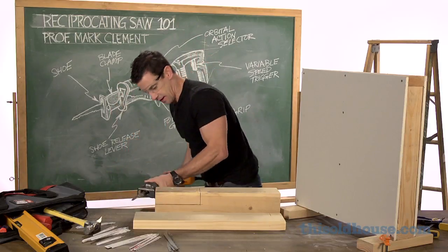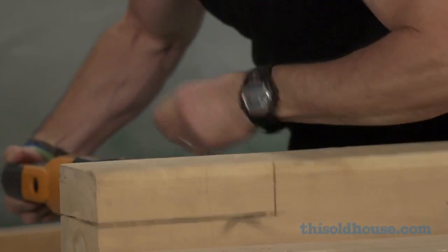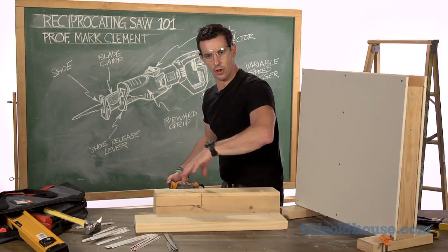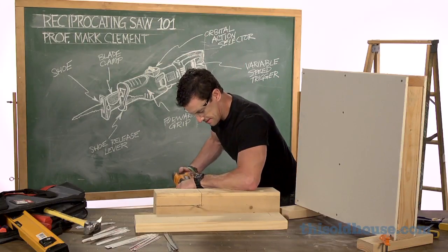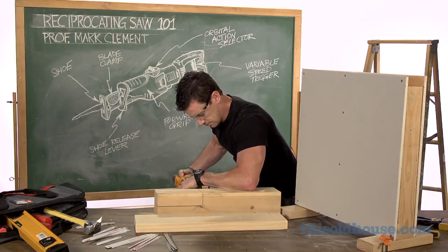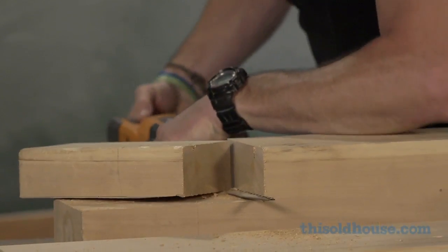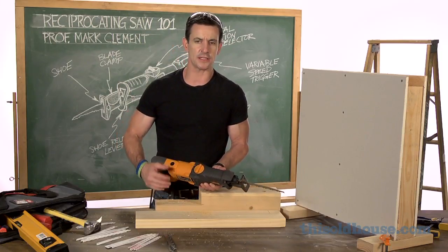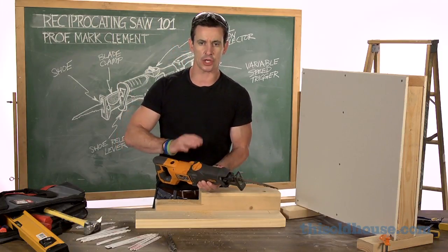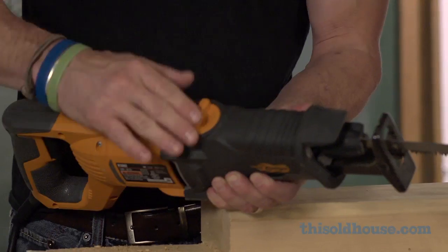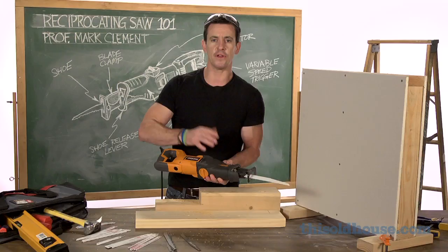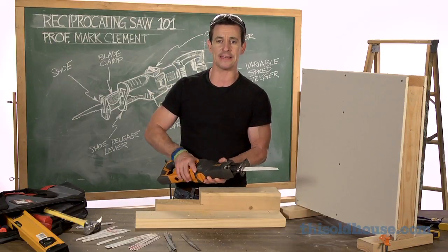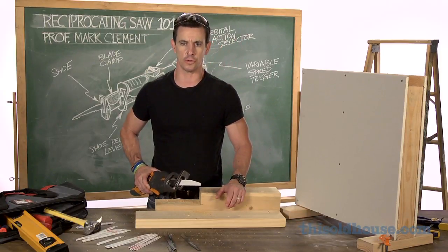I'll let the saw into the cut and follow where the circular saw couldn't get. For cutting along the grain or in a high-stress application like this deck post, a tree branch, all kinds of stuff — I'm going to lean on this orbital action and use the tool the way I need to. Thanks for watching Tool School.